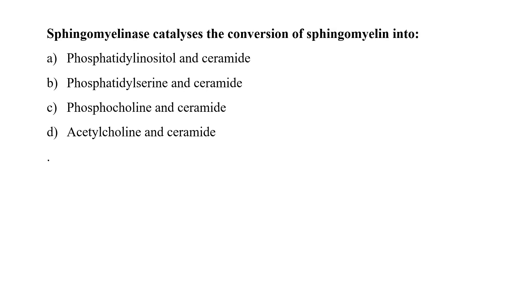Sphingomyelinase catalyzes the conversion of sphingomyelin into phosphatidylinositol and ceramide, phosphatidylserine and ceramide, phosphatidylcholine and ceramide, or acetylcholine and ceramide. Basically, sphingomyelinase catalyzes the hydrolysis of sphingomyelin to ceramide and phosphatidylcholine. So option C is the correct answer.